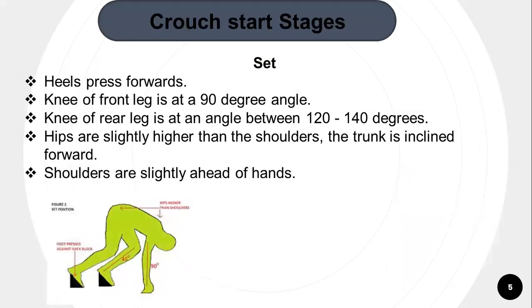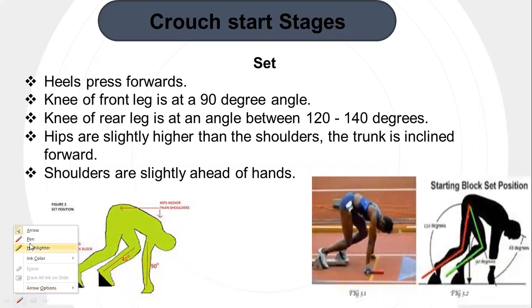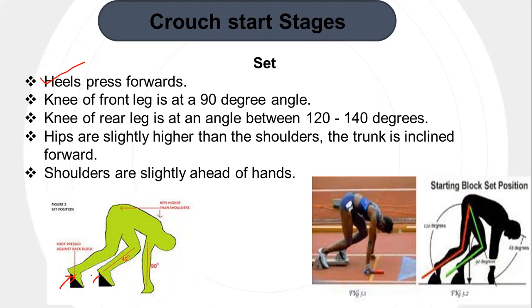Now we will talk about the set position. In set position, the characteristics are as follows: heels press forward. The knee of the front leg is at 90 degrees or near about — 90 degrees gives you maximum support to generate maximum force and control. The angle of the rear knee ranges between 120 to 140 degrees; it changes accordingly depending on the various kinds of starts, which we will discuss later. Hips are slightly higher than the shoulders.